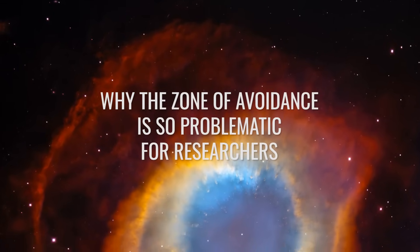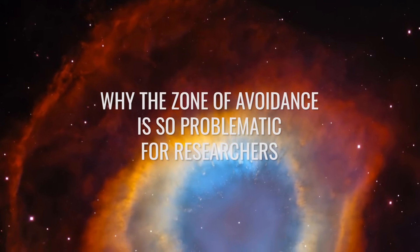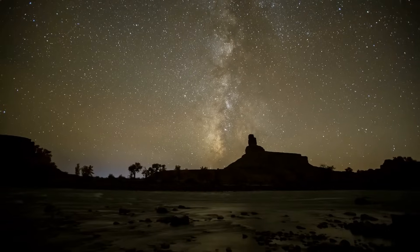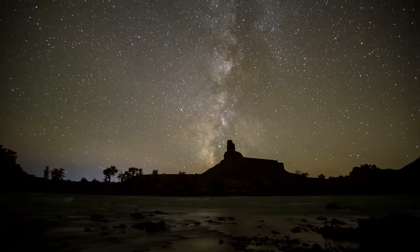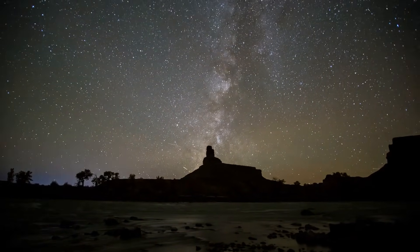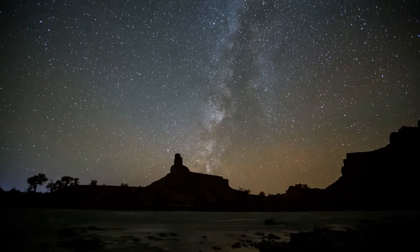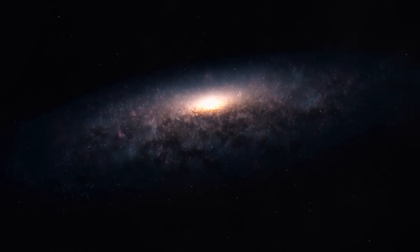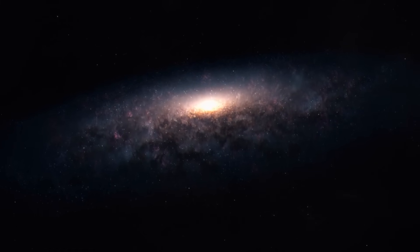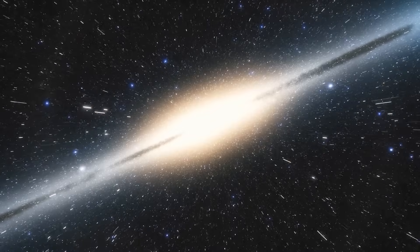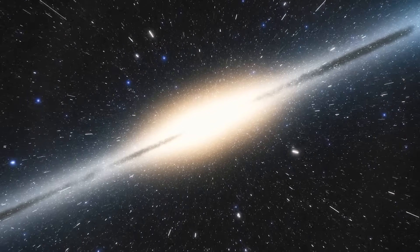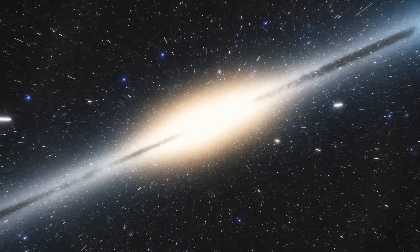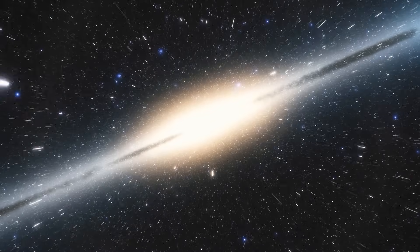Why the Zone of Avoidance is so problematic for researchers. As briefly mentioned at the beginning, the Zone of Avoidance is located at the Galactic Equator of the Milky Way. But what does that actually mean? Well, to illustrate this, we can imagine our home galaxy as a gigantic disk studded with countless stars. And in this case, the Galactic Equator represents the line that runs around this disk.